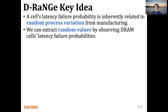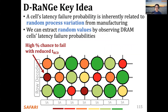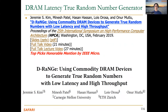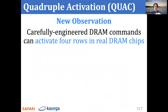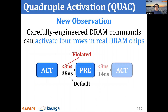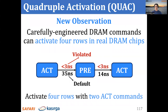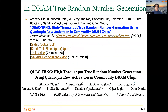Based on a similar idea, DRANGE proposes extracting random numbers by observing DRAM cell latency failure probabilities when reducing tRCD — some cells have a higher chance of failure than others. More recently, QUAC-TRNG (quadruple row activation) generates random numbers by activating four rows simultaneously through violation of DRAM timing parameters. QUAC-TRNG generates random numbers at an even faster rate than DRANGE.